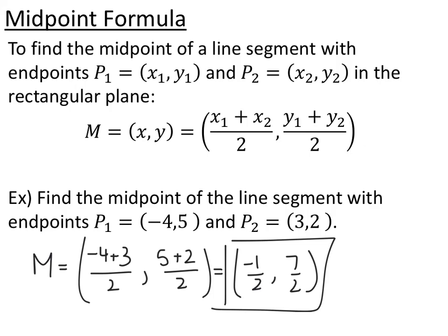The average between negative 4 and 3, or the x-coordinates, is negative 1 half, and the average between 5 and 2, the y-coordinates, is 7 half. So your new x-coordinate is negative 1 half, and your new y-coordinate is 7 half.